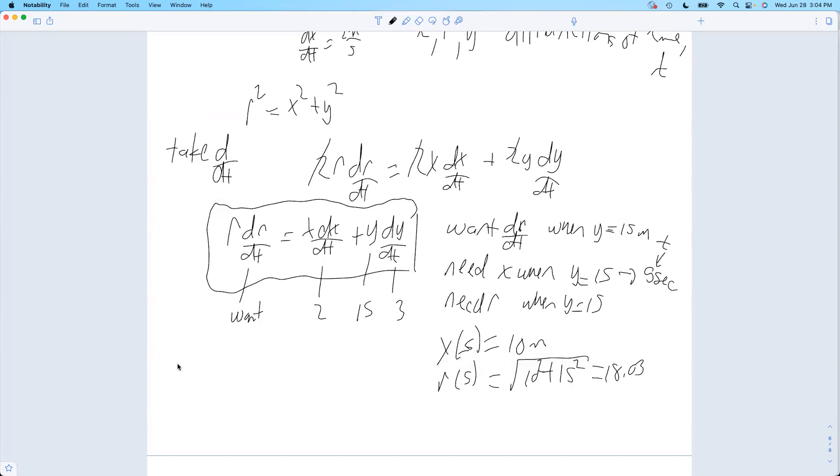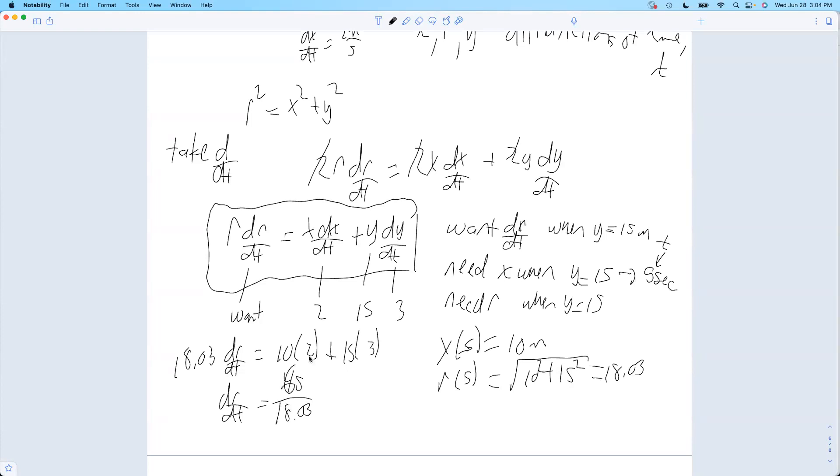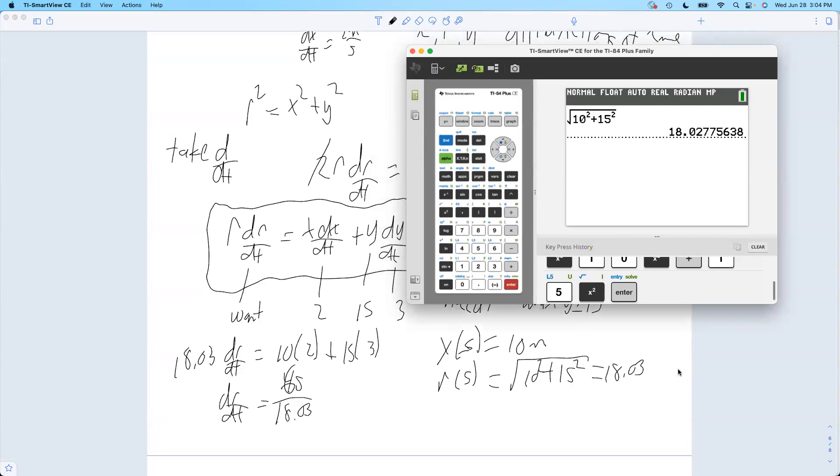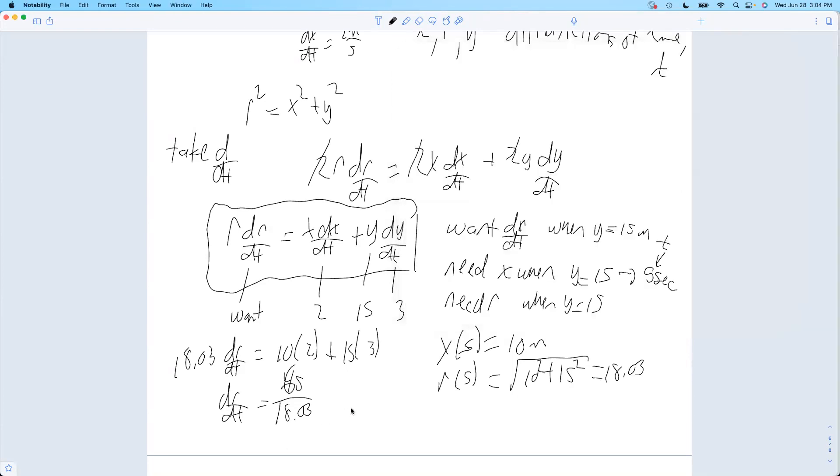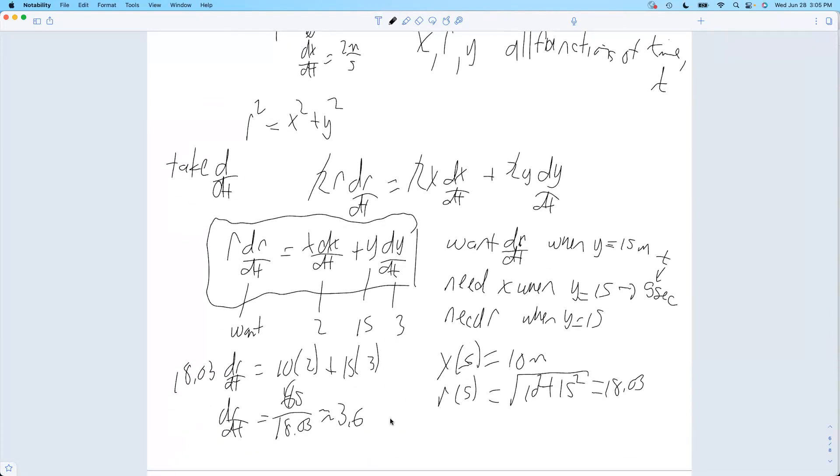Okay, so now filling everything in: 18.03 times the thing I'm after, dr/dt, will equal x, 10, times dx/dt plus y at that moment, 15, times dy/dt. So what do we get here? That's 20 plus 45. I think that's 65, so dr/dt will be... oh and I'm lying to you, that's 65, that was 45 plus 20. 65 divided by that answer, 3.6.